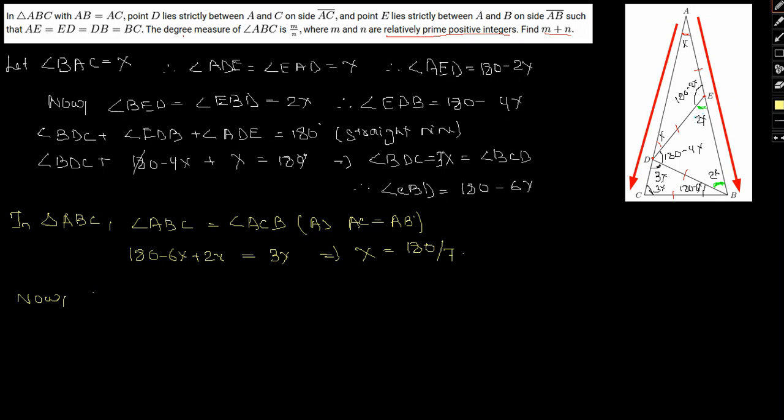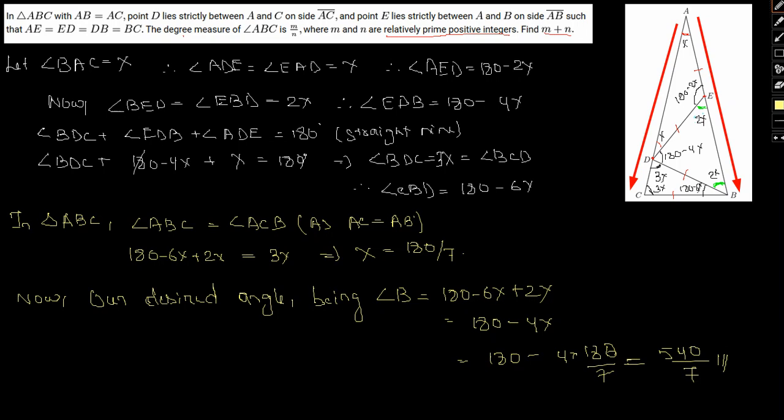So now our desired angle being angle B, which is 180 minus 6X plus 2X equal to 180 minus 4X, would be 180 minus 4 into 180 by 7. This would give me 540 by 7, which is the required answer.